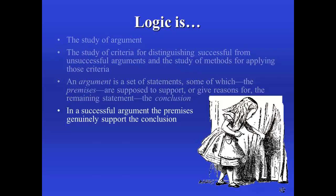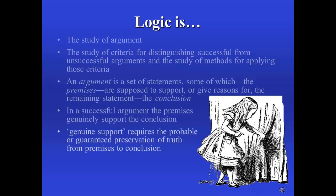the conclusion. In a successful argument, the premises genuinely do support the conclusion. But what do we mean by genuine support? Well, genuine support requires the probable or guaranteed preservation of truth from premises to conclusion. The idea being that if we take the premises to be true, then we can be sure, or be reasonably confident, that the conclusion is also true. If this idea doesn't make perfect sense right now, don't worry too much about it. We'll be talking about it again and again, and we'll make it more precise as we go along.